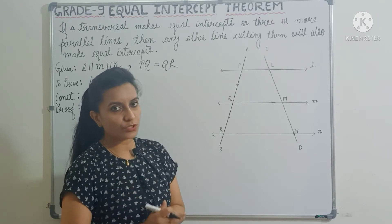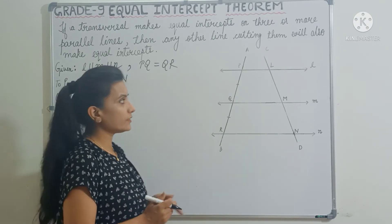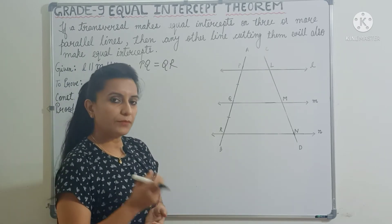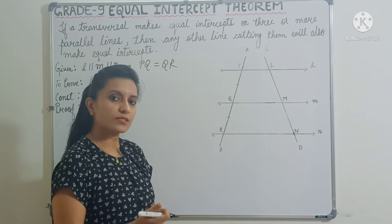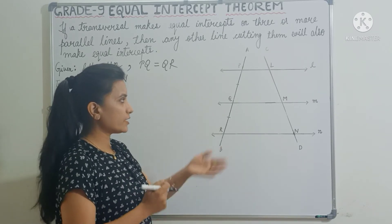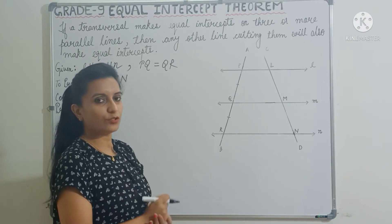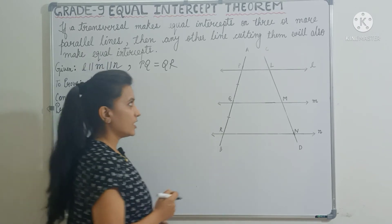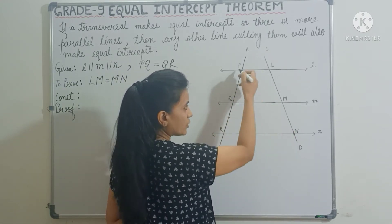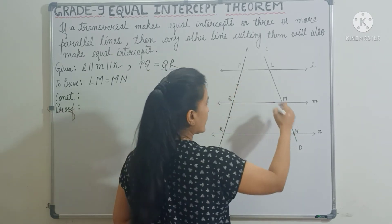Those who don't know can check the video using the i button. We will be using the converse of the midpoint theorem. But the problem is that we can use the converse of the midpoint theorem only if we have a triangle, and there is no triangle here. So what do we do? We will do a construction. Let's join PN. If we join PN, we will get two triangles.